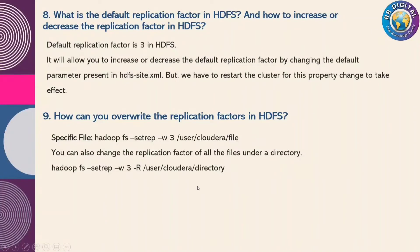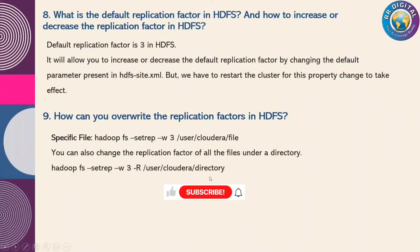You can also change the replication factor for all files under a directory. If there are 100 files under one directory and you want to change all of them, the command is: hadoop fs -setrep -w followed by 3 or 4, then the -R flag, and then your HDFS directory path such as /user/cloudera/directoryname.